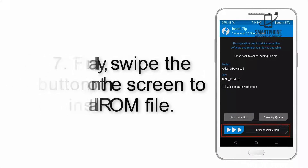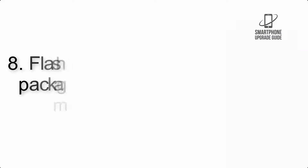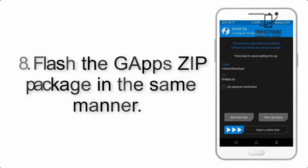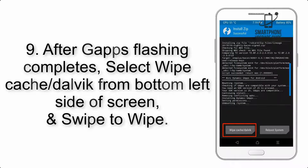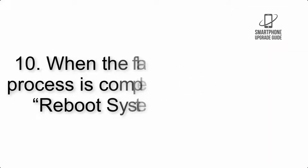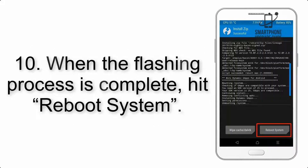Step 7: Swipe the button on the screen to install the ROM file. Step 8: Flash the GApps zip package in the same manner. Step 9: After GApps flashing completes, select Wipe Cache and Dalvik from the bottom left side of the screen and swipe to wipe.